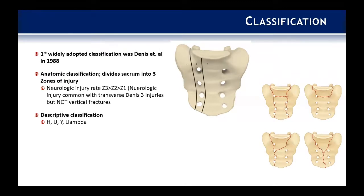There is also the descriptive classification, which is widely used today and describes how the fracture looks in the outlet view — H, U, Y, and lambda types. This classification is easy to understand conceptually, but in practice can be very difficult, largely because CT cuts done at most hospital systems are essentially inlet views of the pelvis. To truly get the outlet-type view, you have to piece together many different puzzle pieces to understand what you're working with.